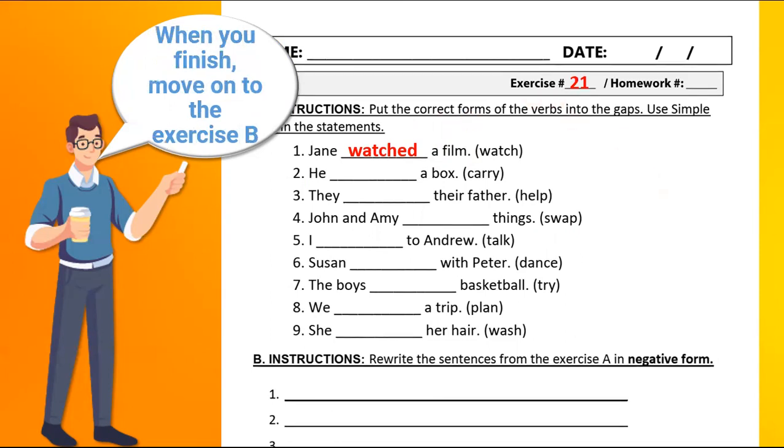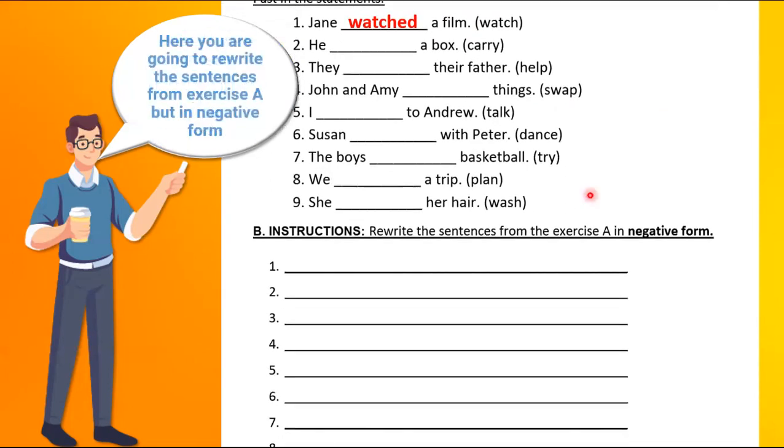When you finish, move on to exercise B. Here you're going to rewrite the sentences from exercise A but in negative form. For example,